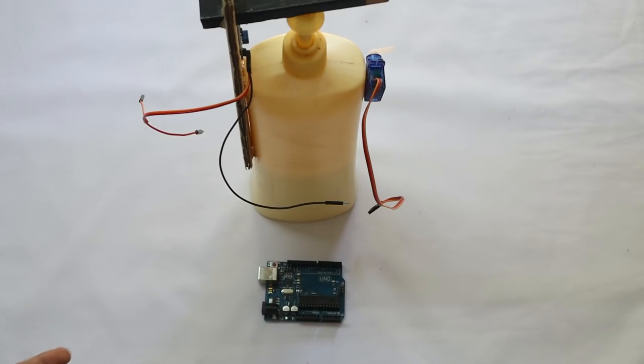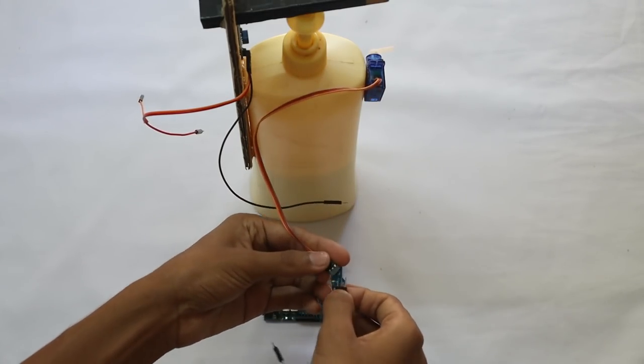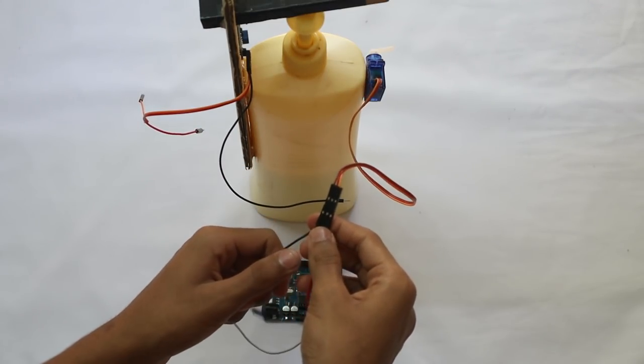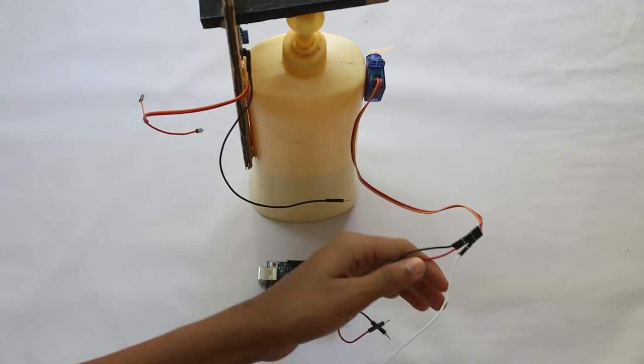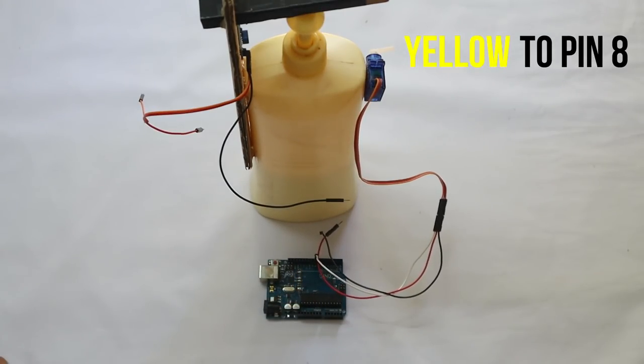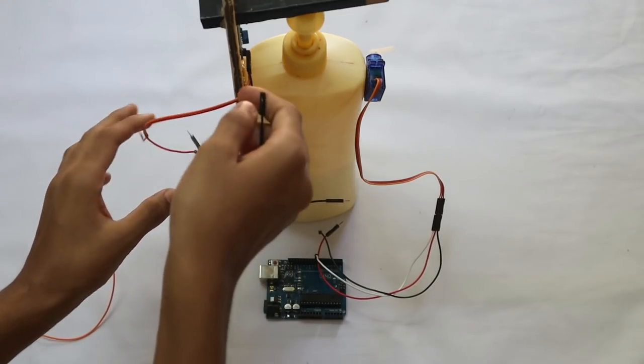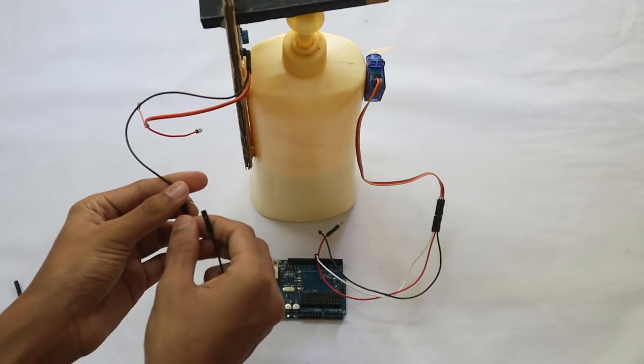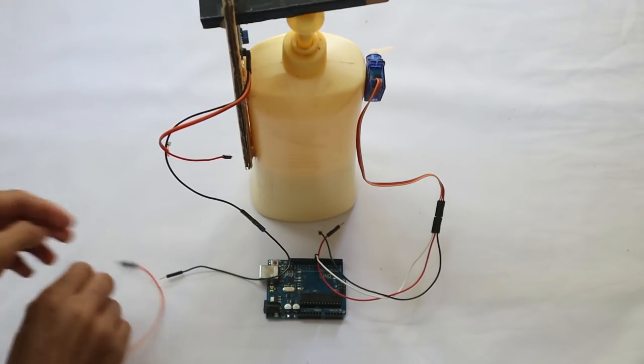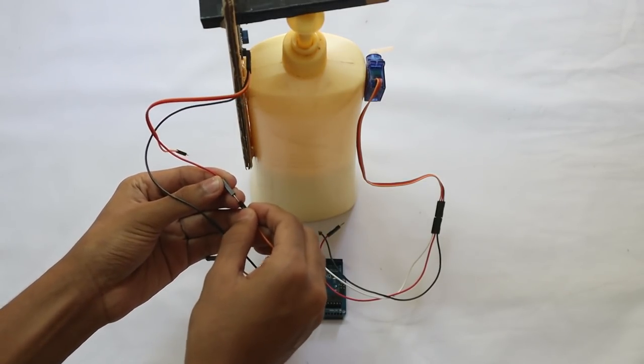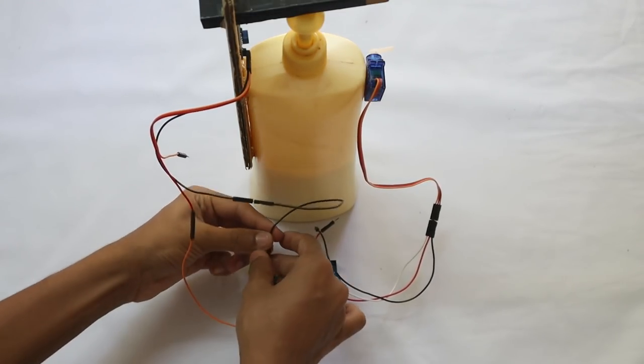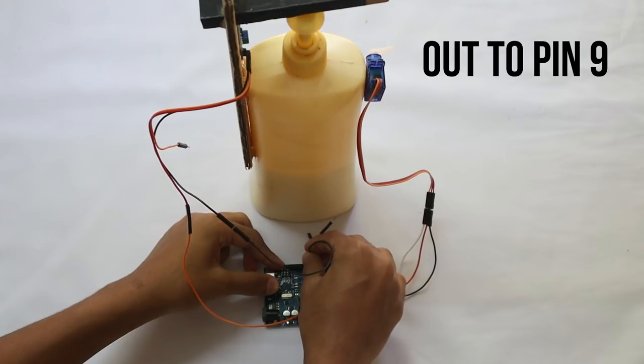After programming your Arduino, connect your servo's wires. All three. Now take the out pin and connect it to pin 8. And I am going to be extending the IR sensor's out pin and the VCC. Now connect the VCC to 5V and the out pin to pin 9.